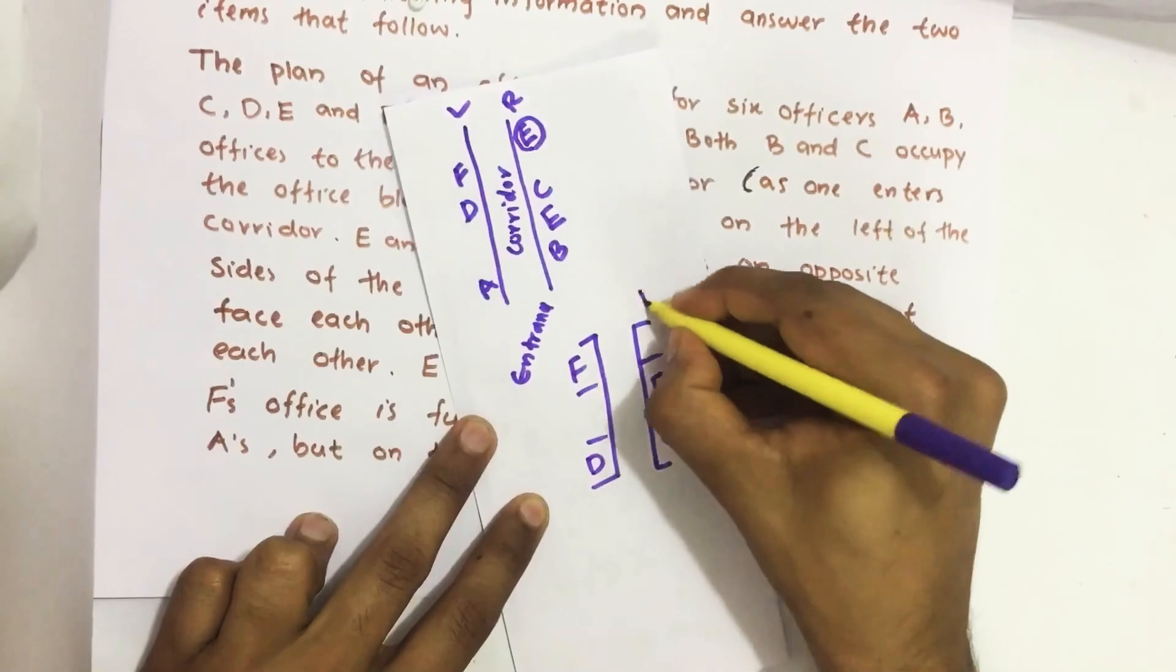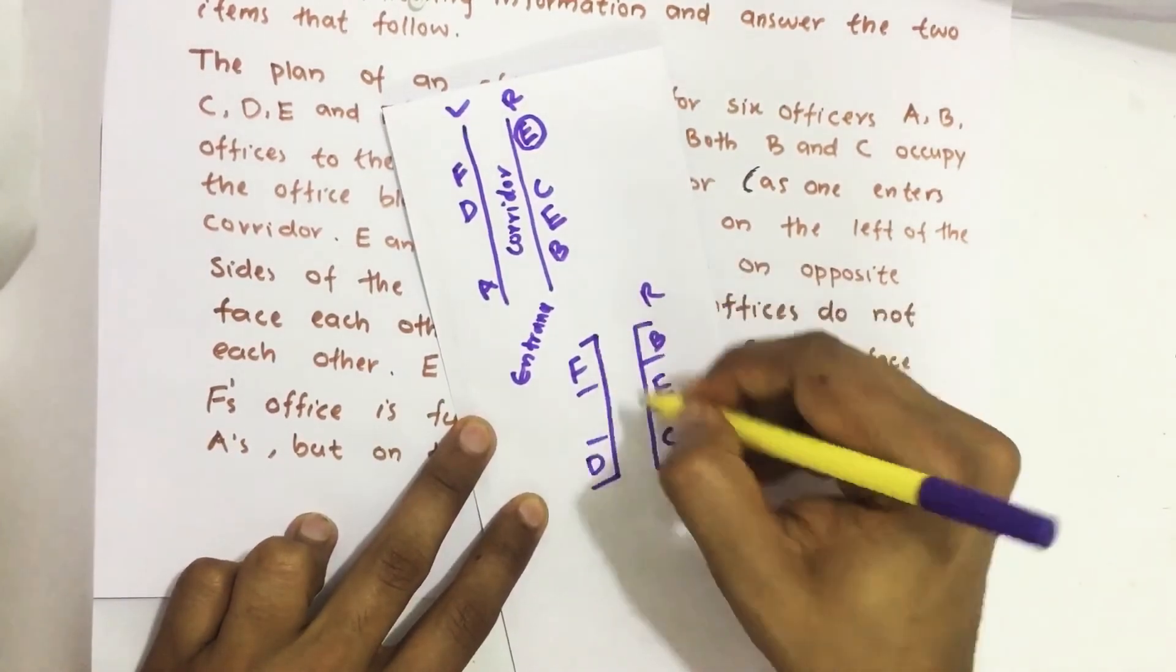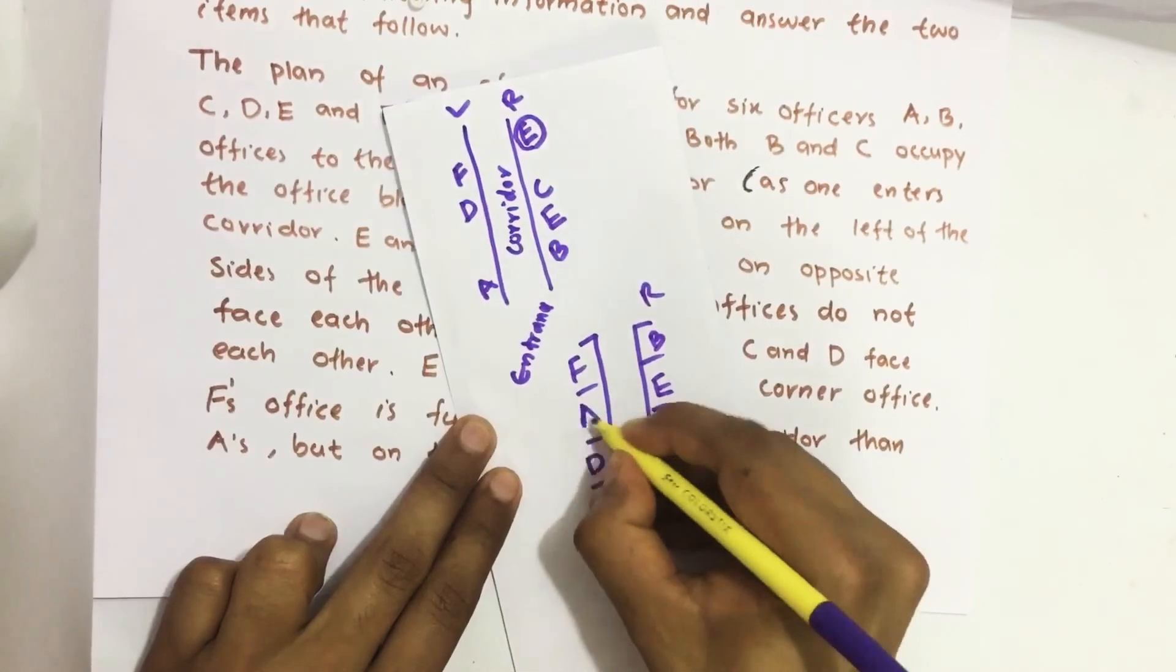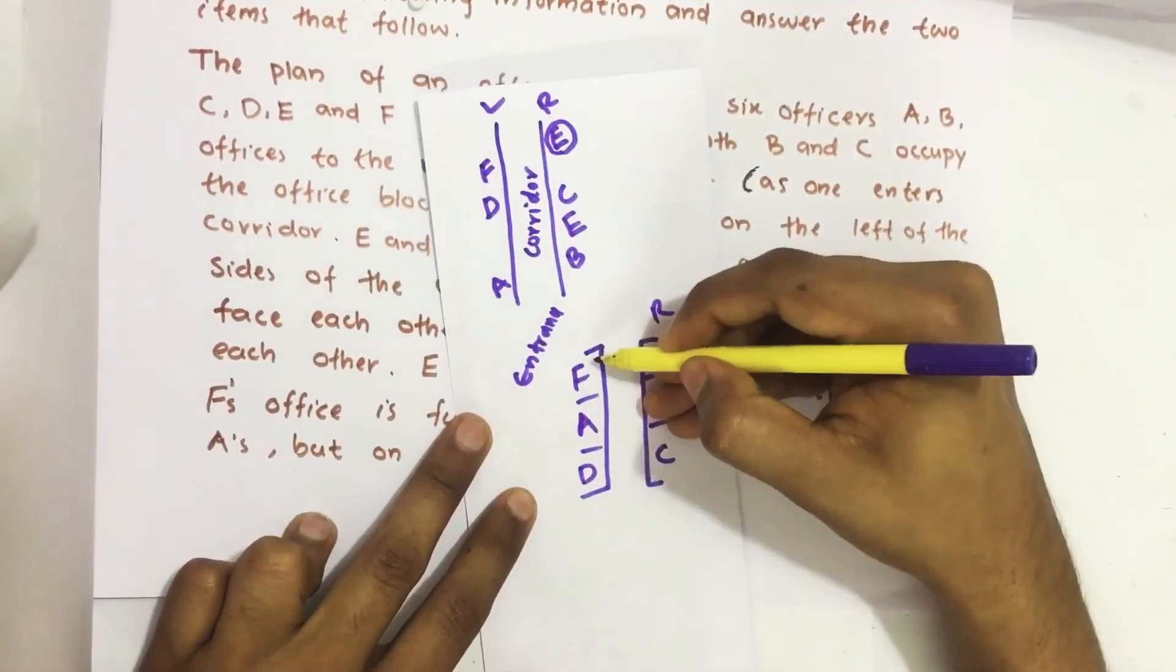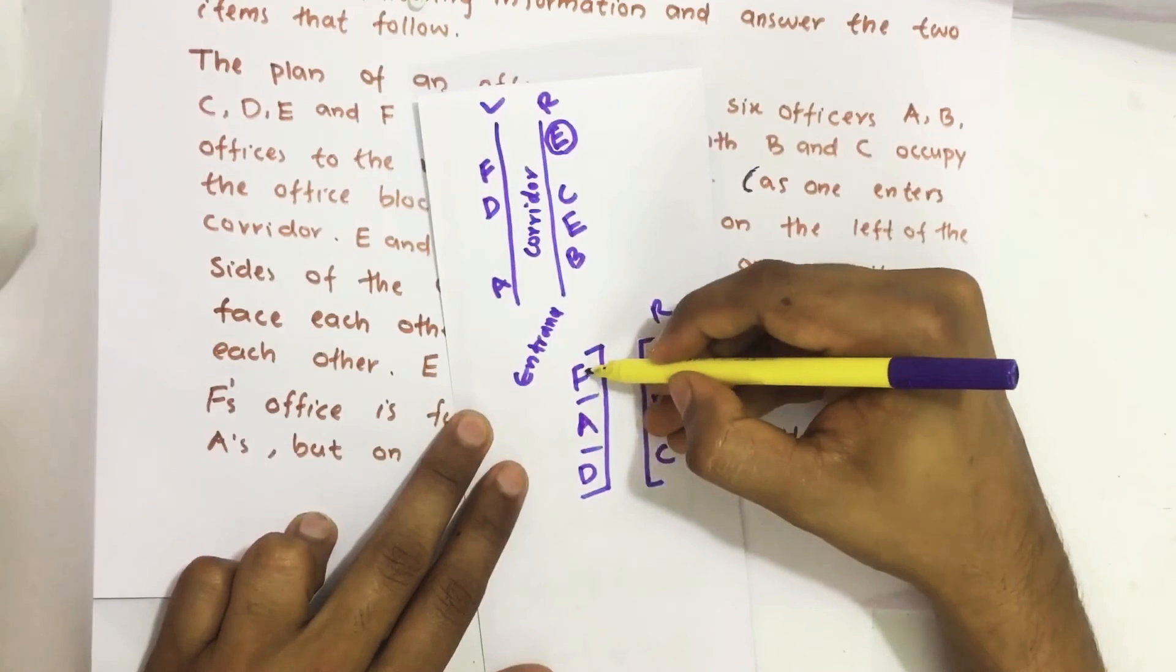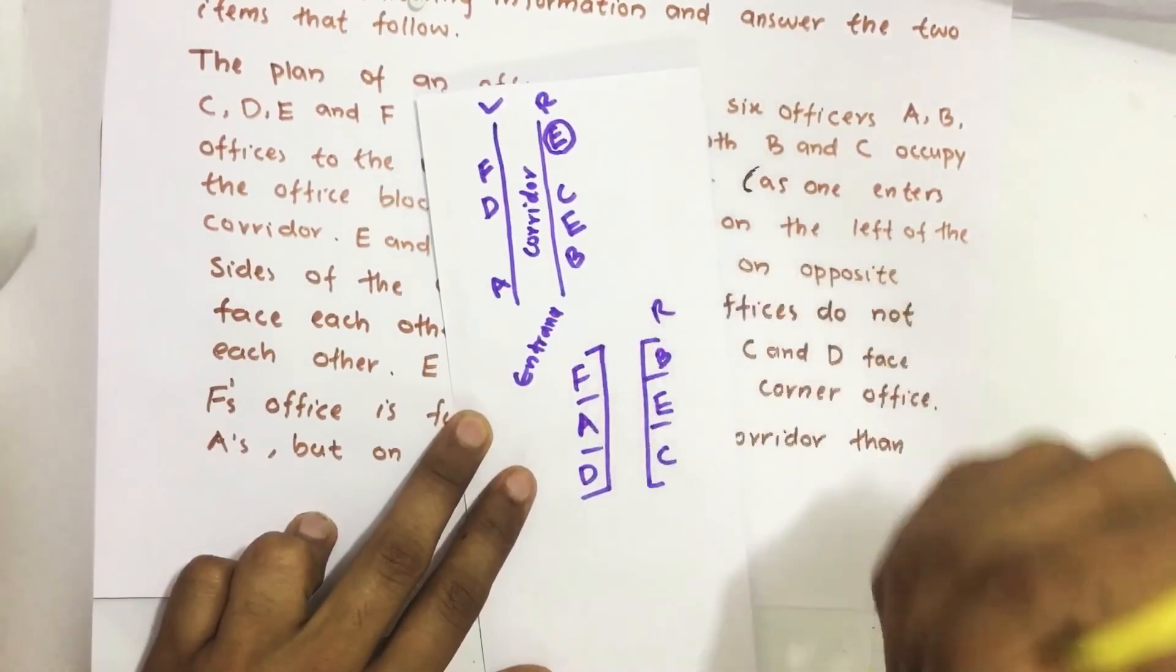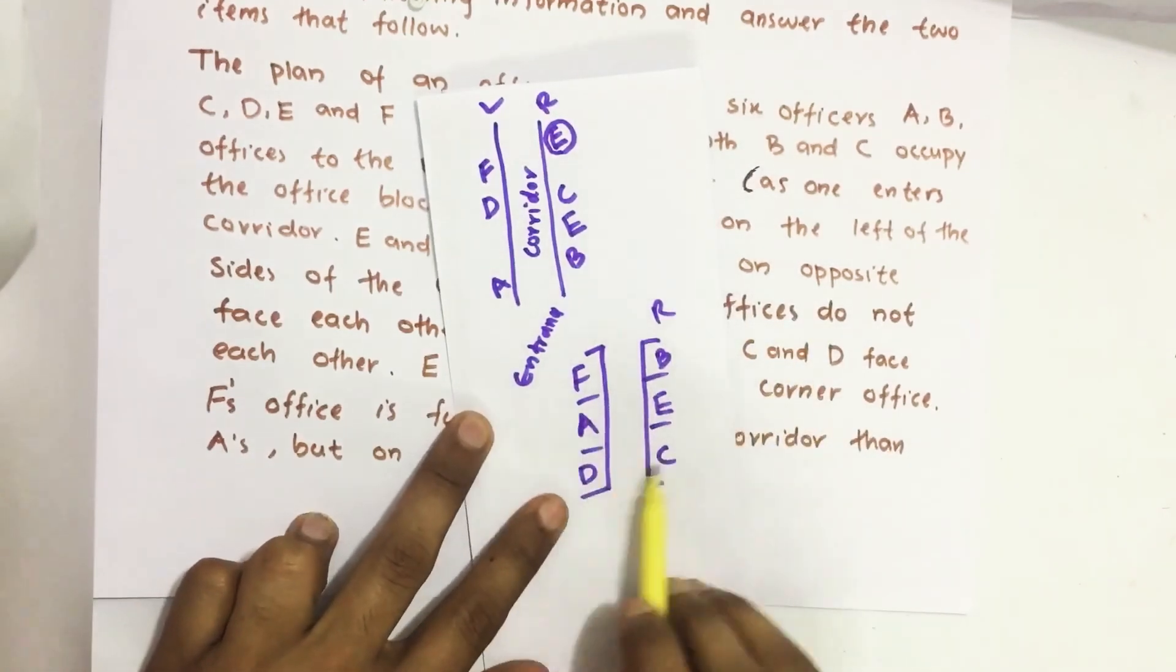And both B and C on the right side. Then remaining A comes here. And F is further down the office than A. And A and F are on the same side. All the conditions are satisfying.